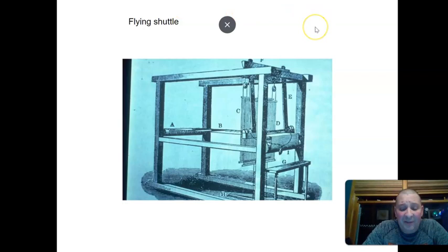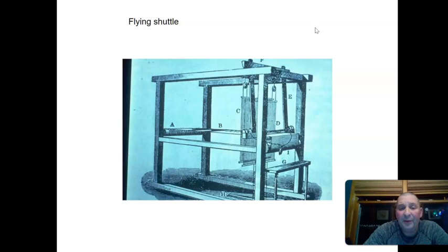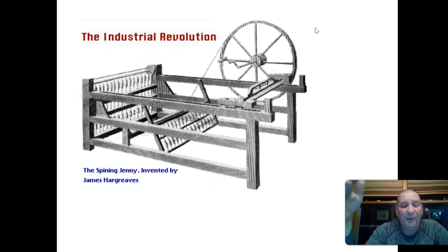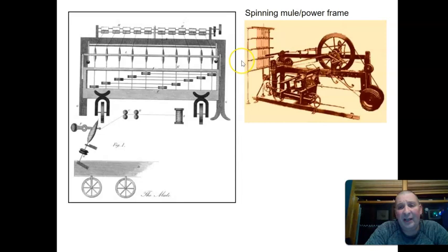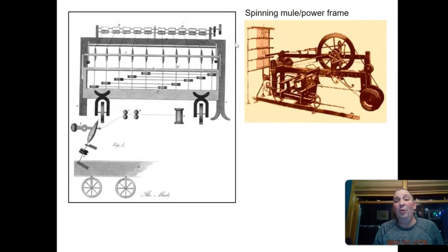The next significant invention didn't happen for 30 years — a reminder that how revolutionary it was depends on how fast you think it has to be. Then 30 years later, the spinning jenny was invented, doubling the output of the spinner so she could keep up with the weaver. Another 20 years later, the spinning mule or power frame combined the spinner and weaver, and the whole thing could be powered by water.